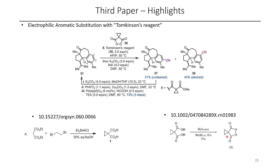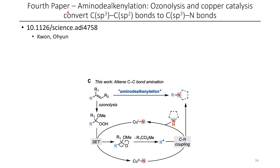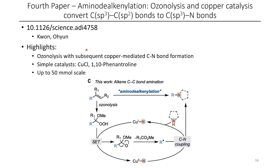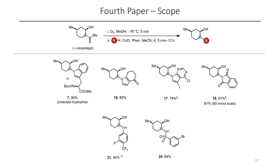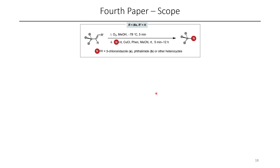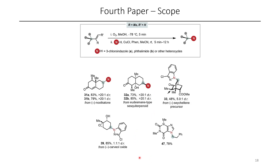If you have an aryl oxidation you're struggling to do, this might be the reagent for you. The fourth paper involves the ozonolysis of substituted alkenes followed by copper-mediated nitrogen-carbon bond formation. The reaction featured a simple copper-1-chloride catalyst with 1,10-phenanthroline as the ligand, and the authors demonstrated this up to 50 millimole scale. The scope was quite good — a number of different nitrogen-based nucleophiles were able to be used, including nitrogen-containing heterocycles, substituted anilines, and sulfonamides. The authors also explored a range of alkenes, such as a derivative of theobromine and some terpenoid-based ones.